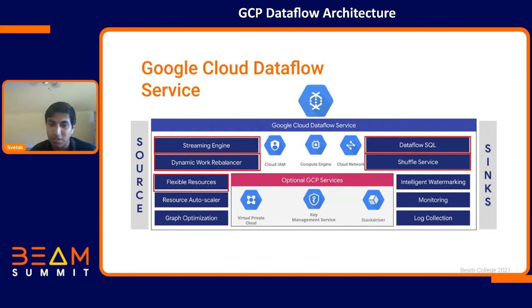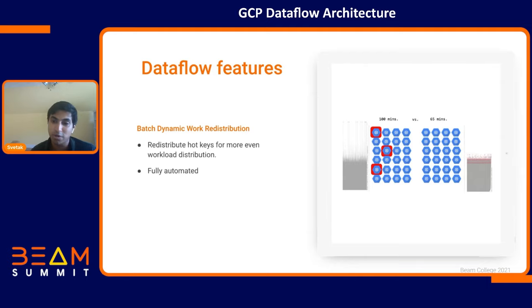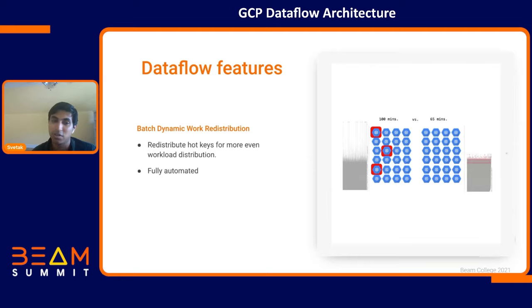Now I want to talk about some other features Dataflow has to offer. The primary worker leases work to secondary workers, but there's sometimes an element of randomness — one worker might get a lot of work while another gets very little, creating an uneven distribution. This is the hot key issue in data processing, which stalls the job and delays parallel processing. We have a feature called batch dynamic work redistribution to redistribute work among secondary workers, and it's fully automated — the person running the Beam pipeline wouldn't even be completely aware of it.